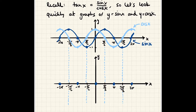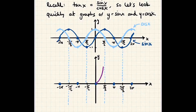Our awareness of the vertical asymptotes and x-intercepts is enough to get a very accurate sketch. For example, if tangent goes through the origin and is asymptotic to the vertical line x = π over 2, then it's either forced to come up or come down asymptotically. There's really no other choice, and it can't be both because we would fail the vertical line test.